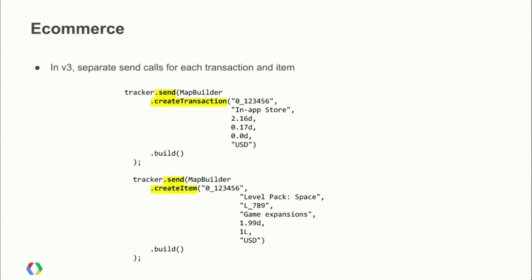The e-commerce change in v3 is actually pretty small. Previously you'd create a transaction object, add items, and send it all in one hit. In v3, you need to make separate send calls for each transaction and item. The syntax is the same as sending app views or events — use the map builder, call create transaction, add all the details, build it, send it, then do the same for each item individually. Make sure the transaction ID in each item matches the transaction ID used in the transaction hit.